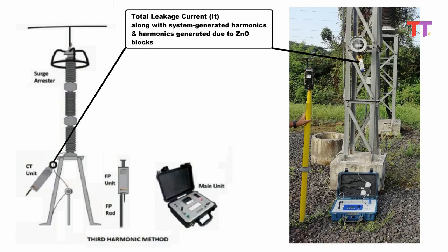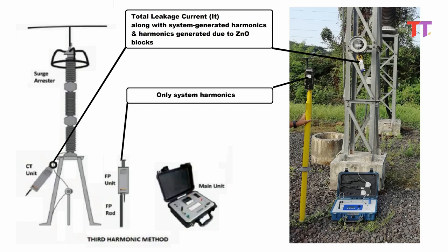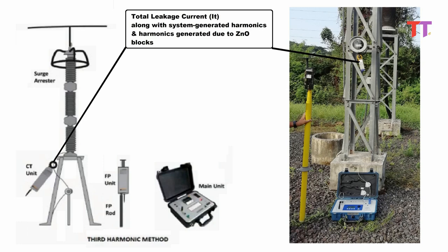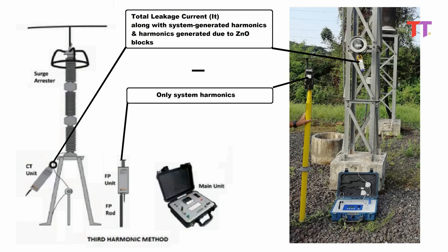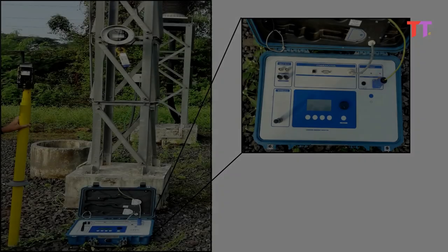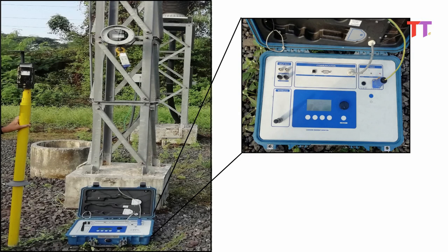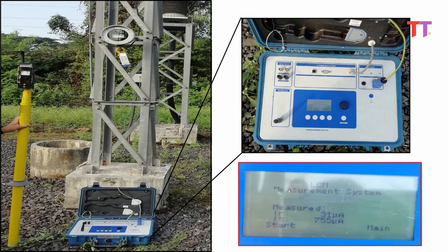To summarize: the CT unit measures total leakage current along with system-generated harmonics and harmonics generated due to ZNO blocks, since it is clamped directly to the LA counter cable. Whereas the field probe unit measures only system harmonics, since it is not connected to the LA circuit. Hence, CT unit measured values minus field probe unit measured values gives ZNO-generated harmonics values. Once the connections and measurement setup are ready and we press the test button on the kit, we get the reading of total leakage current and resistive leakage current.